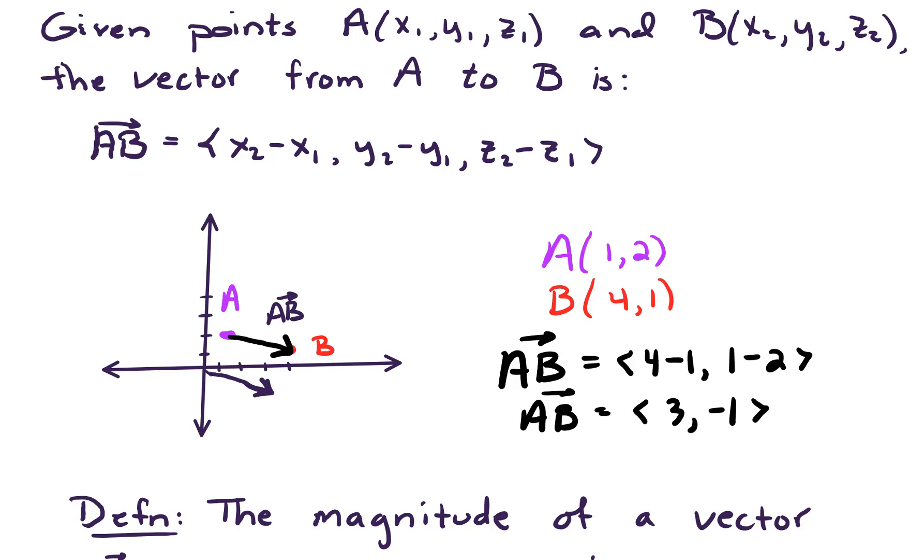And as we've discussed previously, that vector is the same as the vector we drew right here. Label it vector AB. Because a vector is the same, provided it has the same direction and the same magnitude. So those two vectors are the same. And that's a good example of how to find a vector from a point to another point.